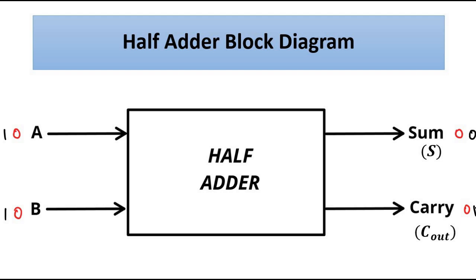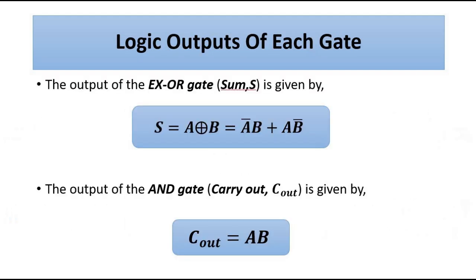For 1+0 the result will be 1 with a carry of 0, and 0+1 the result will be 1 with a carry of 0. Only in the case of 1+1 will the sum be 0 with a carry of 1, so the carry bit will be activated and show 0 on the sum output.